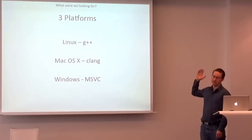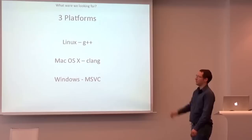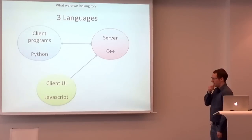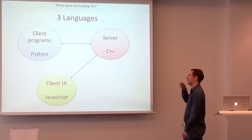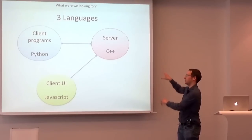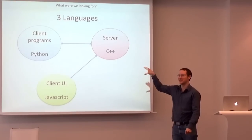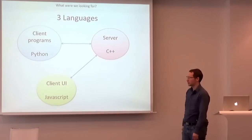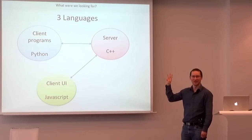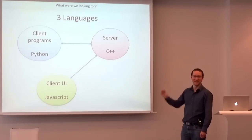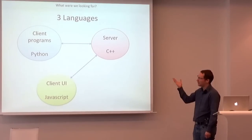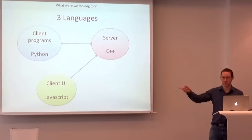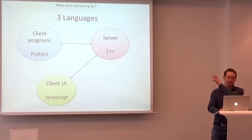We wanted a framework that supported three platforms using the usual build tools you'd expect on those platforms. Our particular situation is probably not that uncommon — these are the three domains, and probably the most popular programming languages for each: C++ is perfect for server-side stuff, and then Python and JavaScript. How many people are using this triad of languages right now? I think that's quite a popular combination.